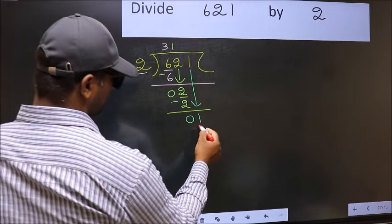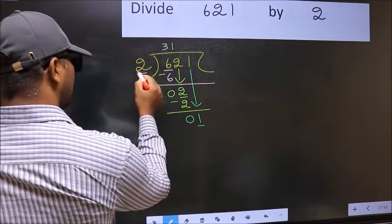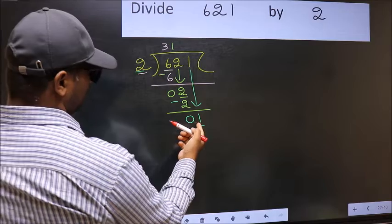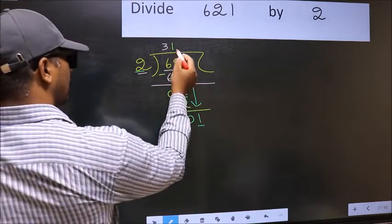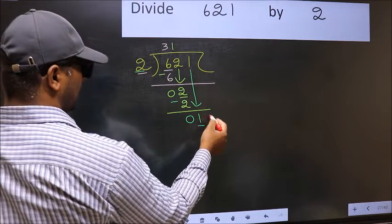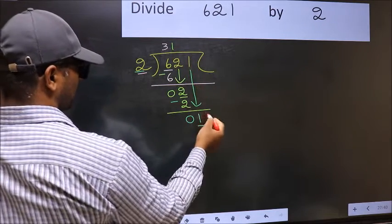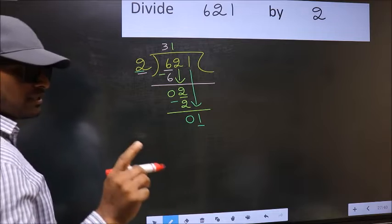Here you have 1 and here 2. 1 is smaller than 2. So what many do is, they directly put a dot and take 0. Which is wrong.